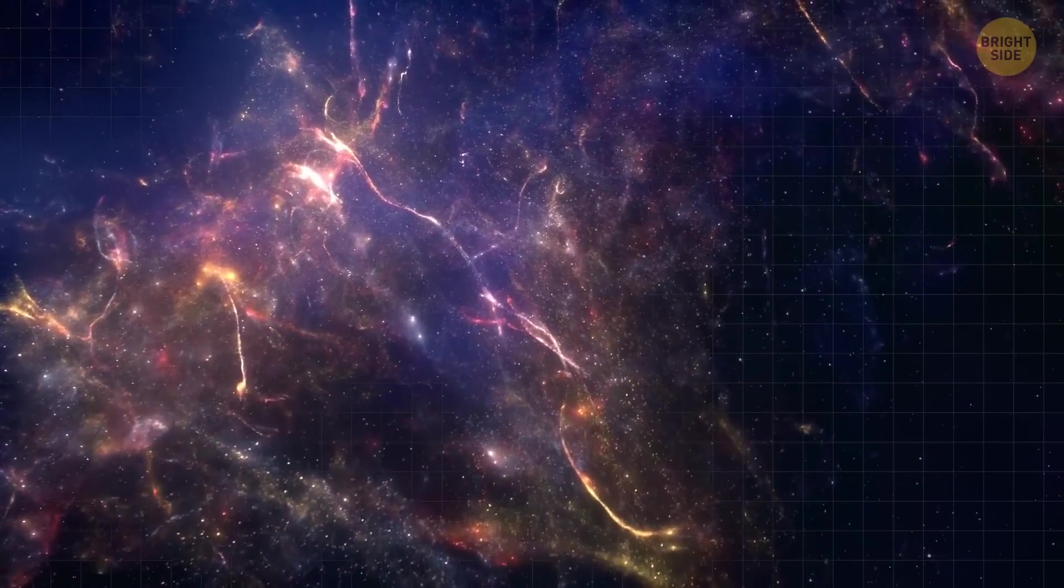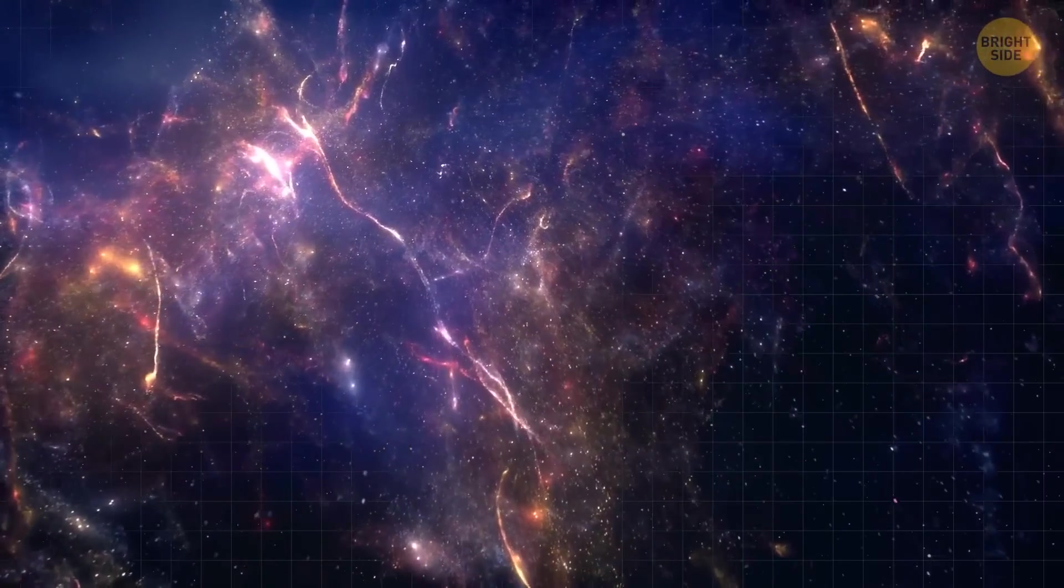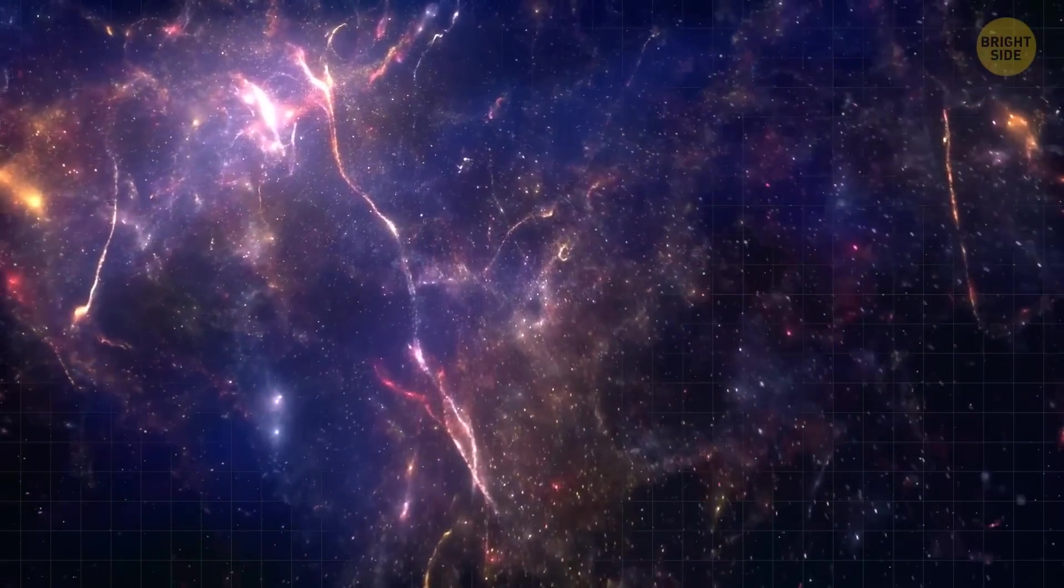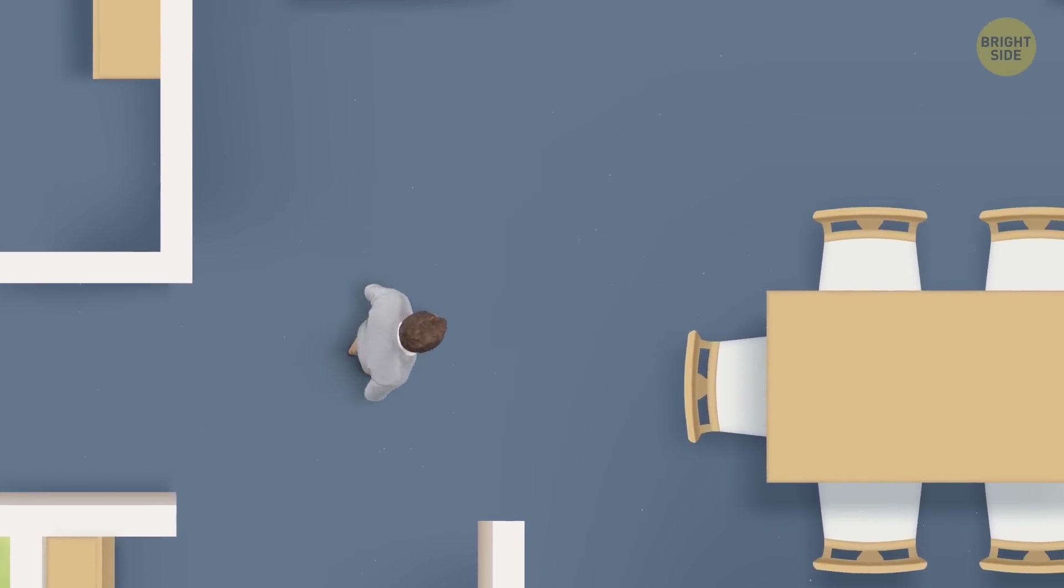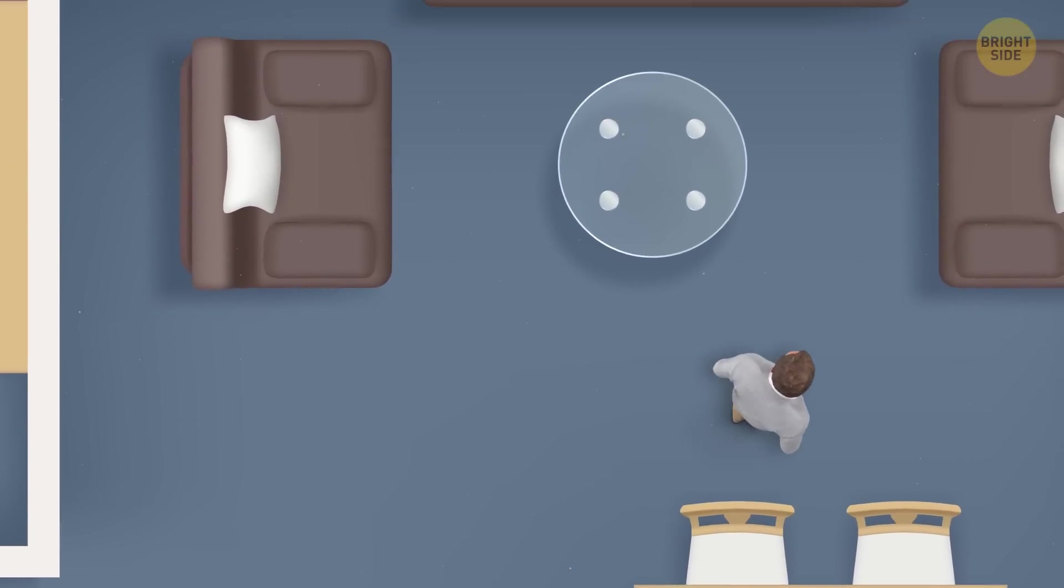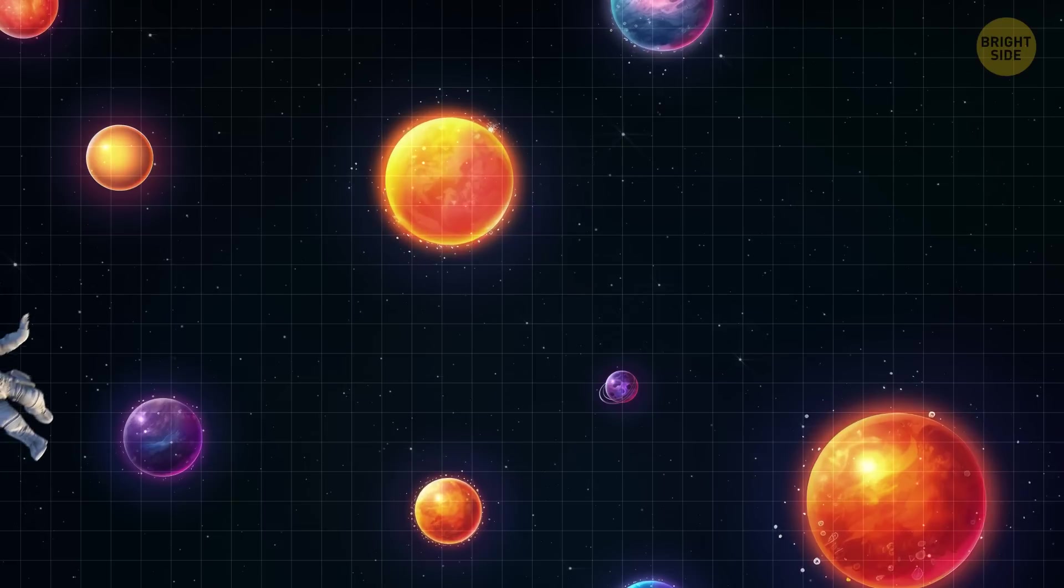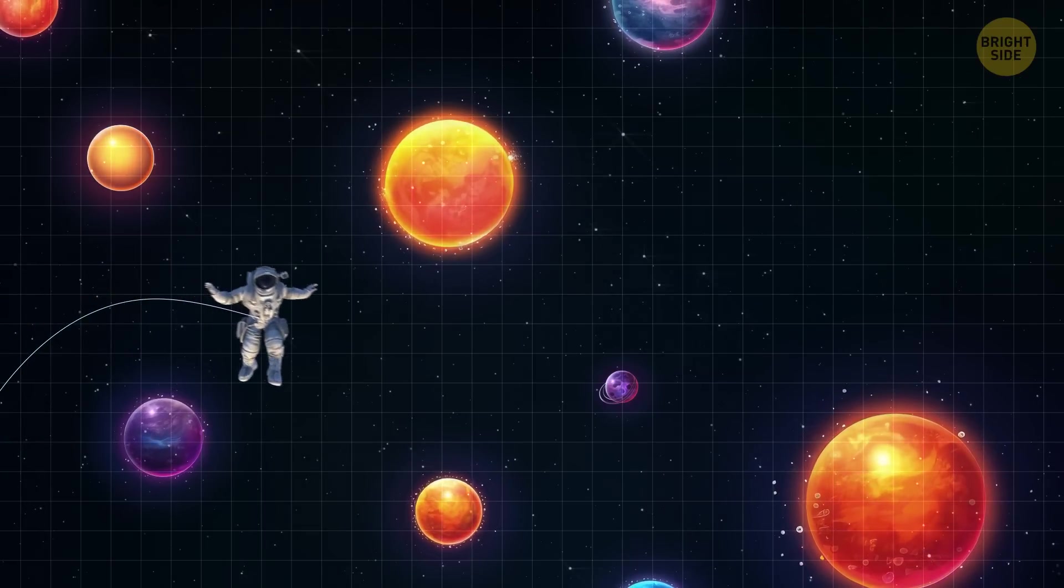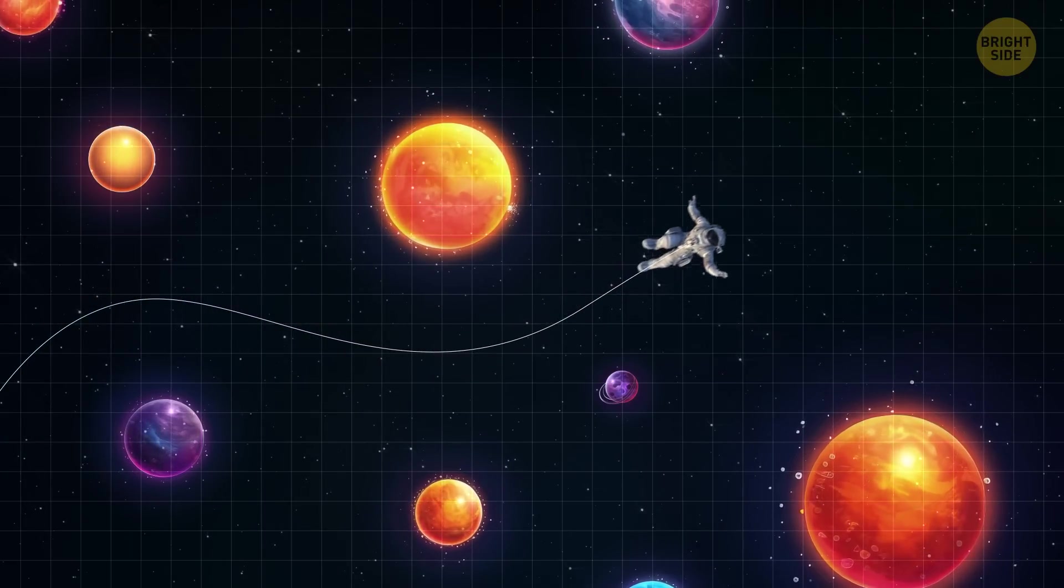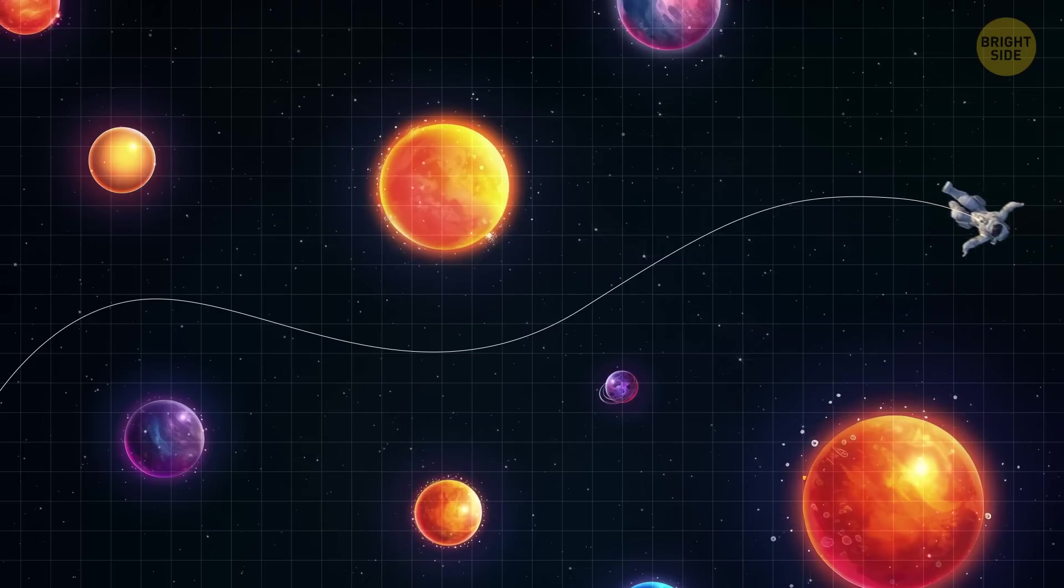These objects have their own gravitational forces that can influence the path you need to take. It's like you have to carefully navigate through the room, avoiding bumping into others or getting pulled off course by their movements. In a similar way, when falling into a black hole, you need to navigate through the influences of other celestial objects.